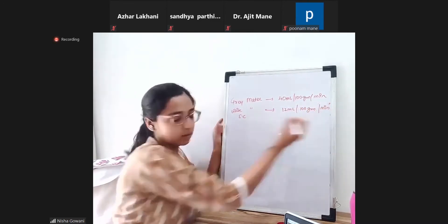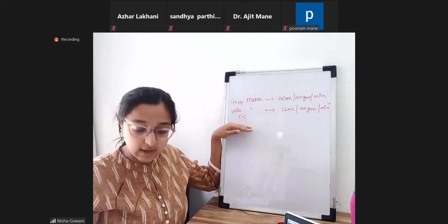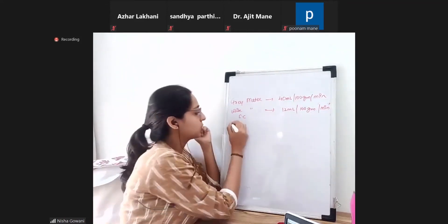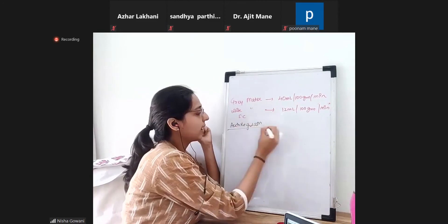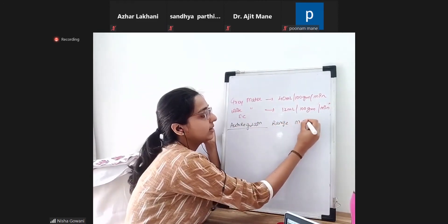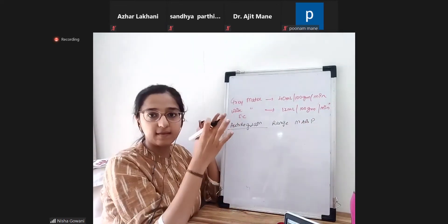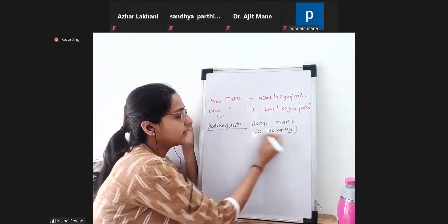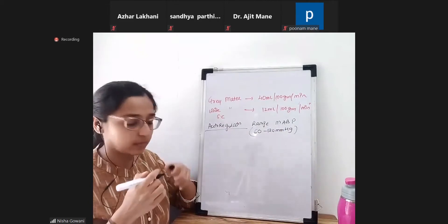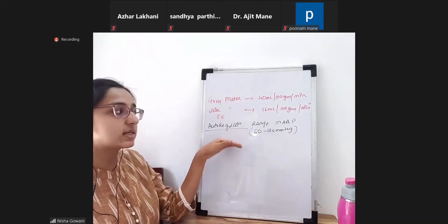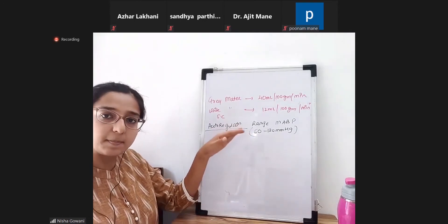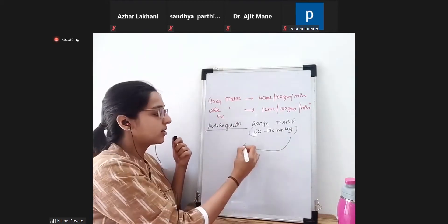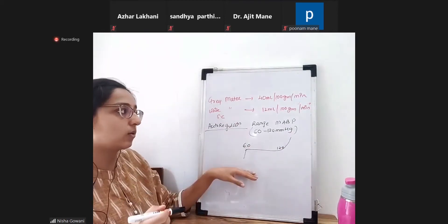Blood flow to the white matter of the spinal cord is 12 ml per 100 grams of tissue per minute. Autoregulation occurs in the spinal cord, just as in the brain. The range of autoregulation is a mean arterial BP of 60 to 120 mmHg — within this range, blood circulation to the spinal cord will not be affected.